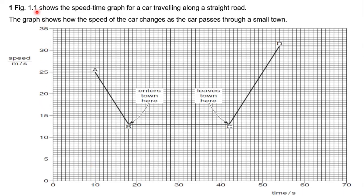Let's see question number 1. The question is, figure 1.1 shows the speed-time graph for a car traveling along a straight road. The graph shows how the speed of the car changes as the car passes through a small town.